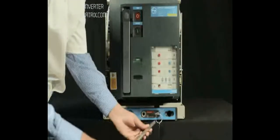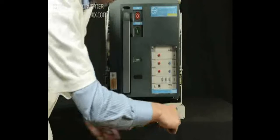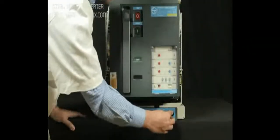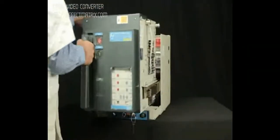Place the racking handle back to its position. Pull out the breaker up to maintenance position.